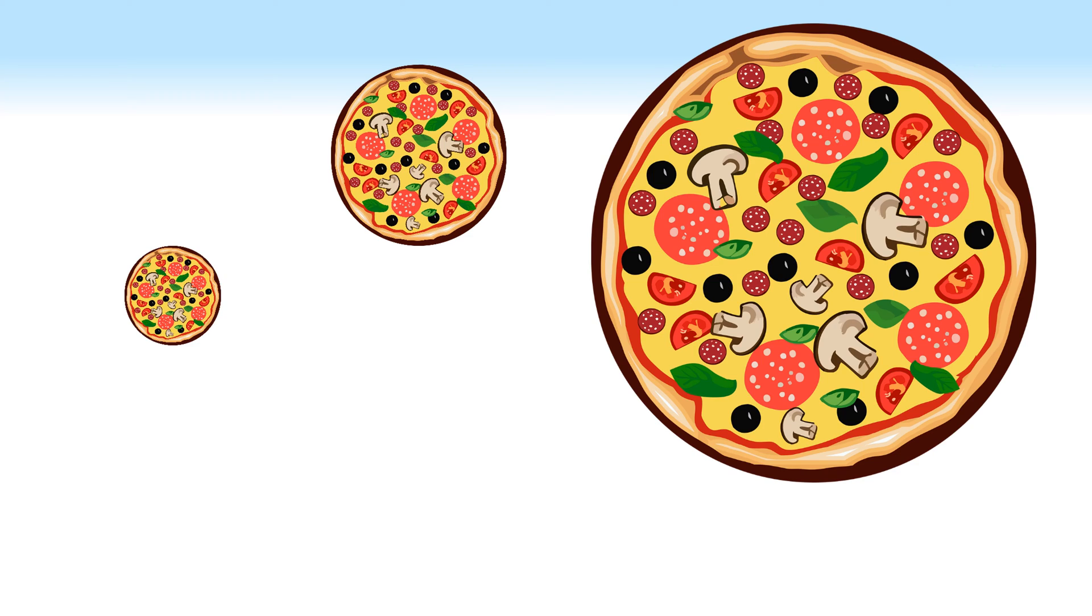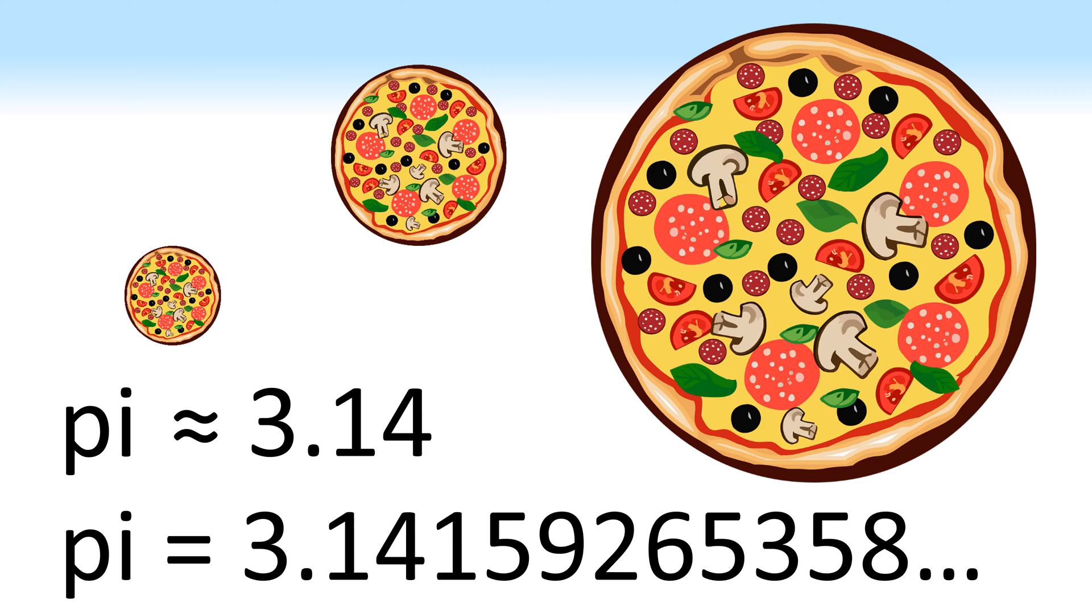Imagine a circle like a pizza or a bicycle wheel. No matter how big or small the circle is, there's a special number we can get from it which always stays the same. This number is called pi and it's approximately 3.14. But the truth is pi never ends. It's an irrational number which means its decimal places go on forever.